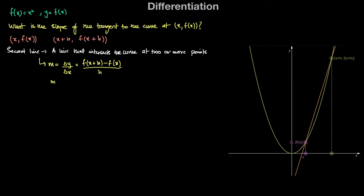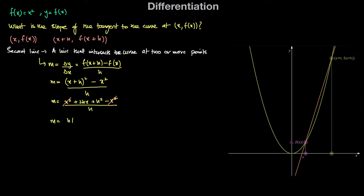The slope is equal to f(x+h) — which is simply (x+h) squared — minus f(x), which is just x squared, all divided by h. Therefore the slope is x squared plus 2hx plus h squared minus x squared, divided by h. The x squared terms eliminate each other, leaving 2hx plus h squared in the numerator. We can factor out h, giving us m equal to h times (2x plus h) divided by h. The h cancels, leaving us with the slope equal to 2x plus h.